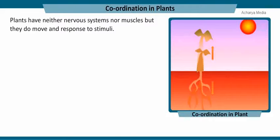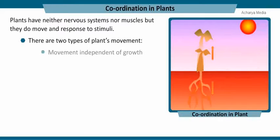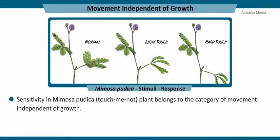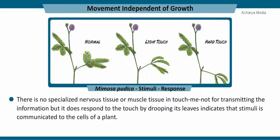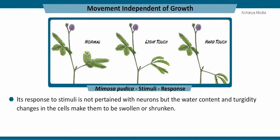Plants have neither nervous systems nor muscles, but they do move and respond to stimuli. There are two types of plant movements: movement independent of growth and movement dependent on growth. Sensitivity in Mimosa pudica, or the touch-me-not plant, belongs to the category of movement independent of growth. This plant doesn't exhibit growth but moves its leaves in response to touch. There is no specialized nervous tissue or muscle tissue in the touch-me-not for transmitting information, but it responds to touch by drooping its leaves. Its response to stimuli is not related to neurons; instead, water content and turgidity changes in the cells make them swell or shrink.